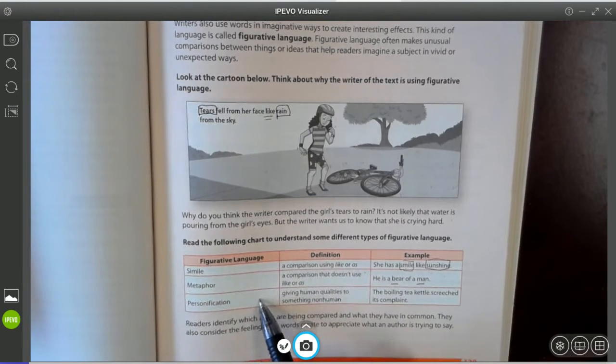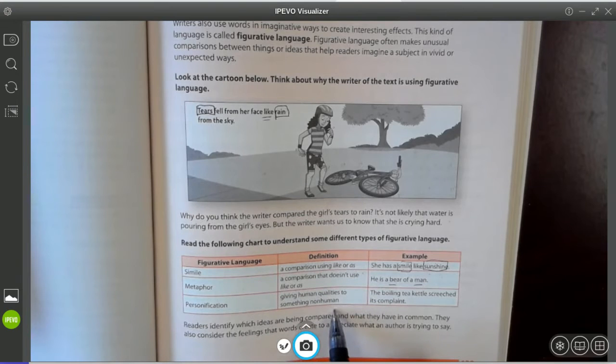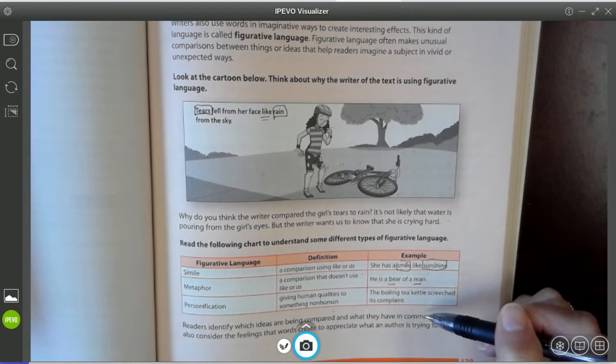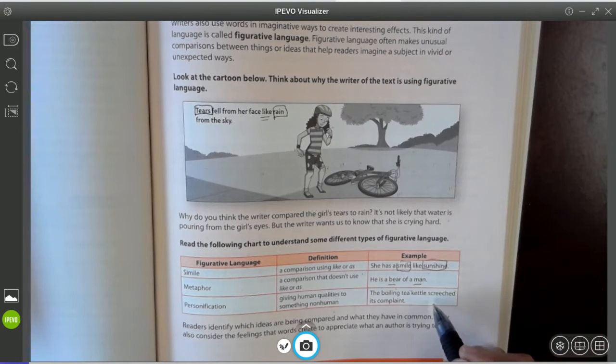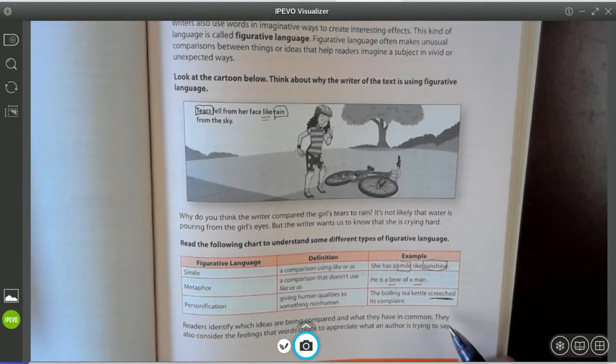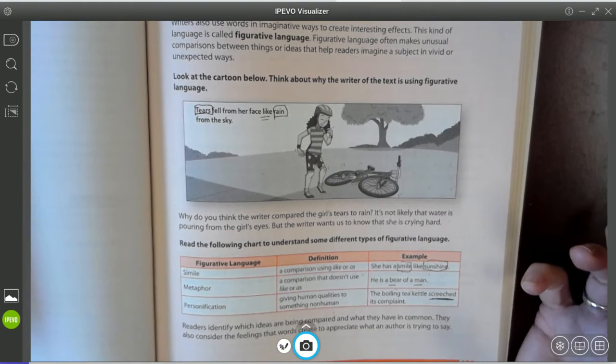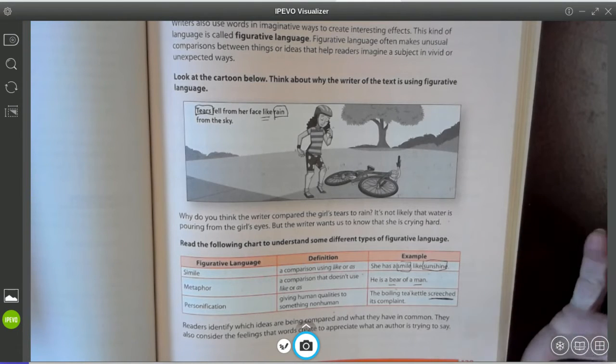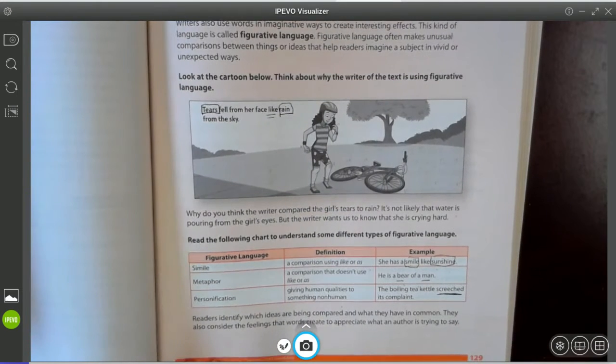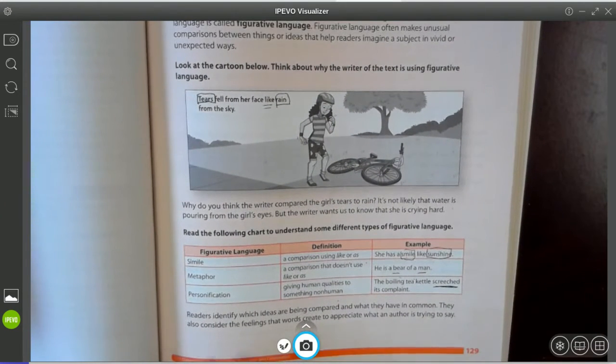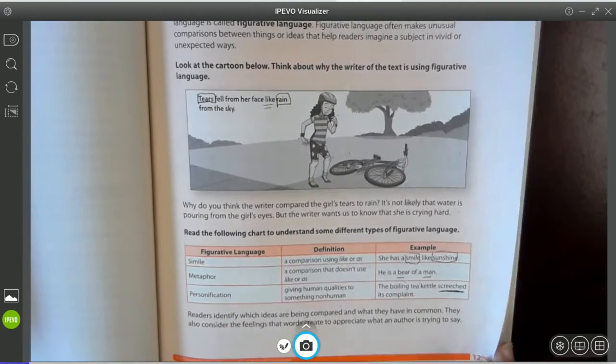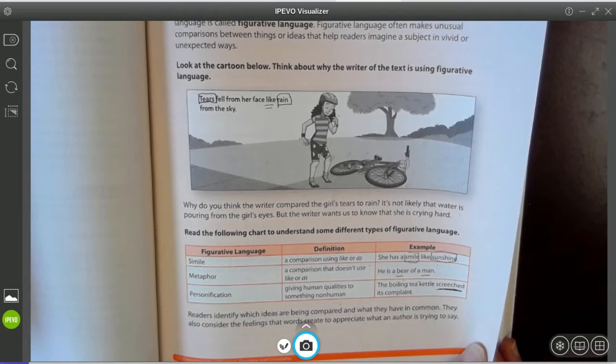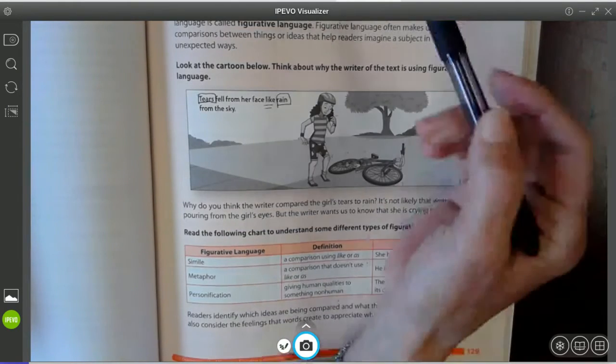And then personification, as we talked about last week, giving human qualities to something that's non-human. An inanimate object. The boiling tea kettle screeched its complaint. The word screeched could mean sounded. It's just sounding like this tea kettle is whining or a complaining person. And we know that a tea kettle can't complain. But the sound of it made it sound as if it were. So readers identify which ideas are being compared and what they have in common. They also consider the feelings that words create to appreciate what an author is trying to say.